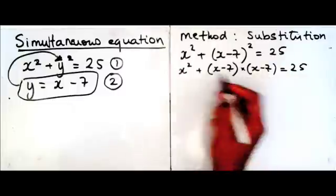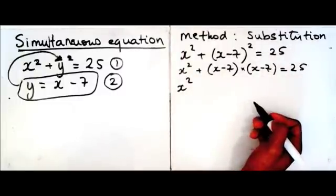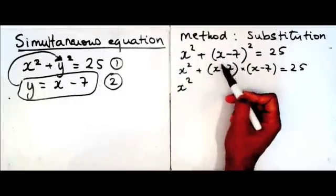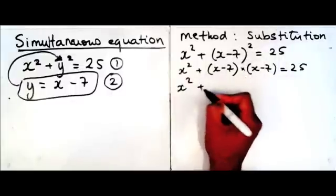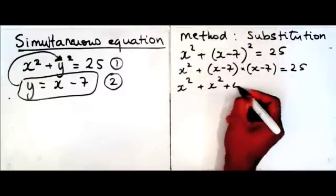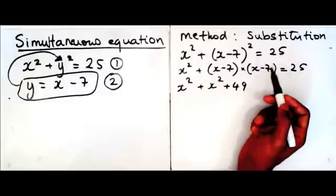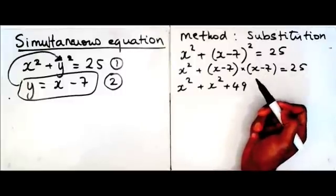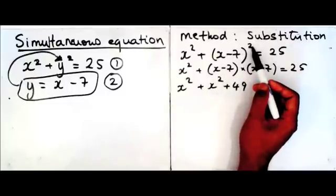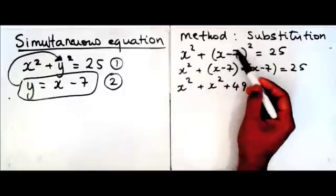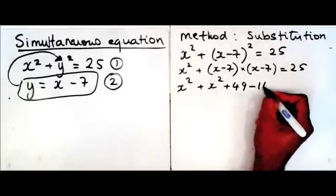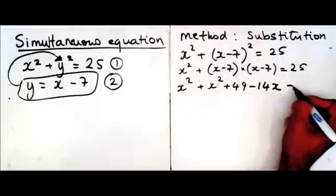We have a double bracket, and to expand it, the quick way is to ask yourself: what is x squared? It's x squared. What is minus 7 squared? It's 49, because minus 7 times minus 7 is plus 49 — a minus and a minus makes a plus. Then you do 2 times minus 7 times x: 2 times minus 7 is minus 14, times x gives minus 14x, and that's equal to 25.